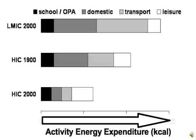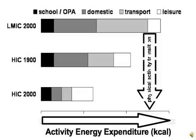Switching to the energy expenditure side of the equation, using the same model: low and middle income countries today, high income countries a century ago, and high income countries today — broken down into school or occupation, domestic chores, transportation, and leisure. Energy expenditure is much higher in low income countries, such as in rural Kenya, or in high income countries a century ago compared to today. Most notably, it is the domestic and transport portions of activity that appear to be shrinking the most, yet these often receive the least attention.